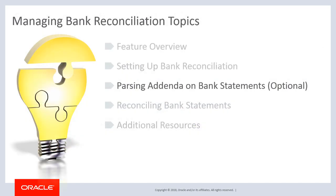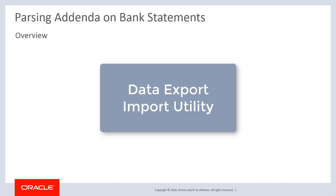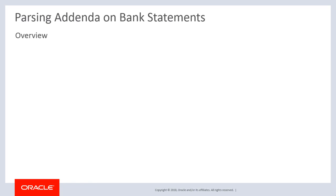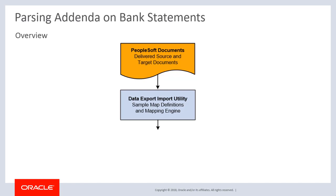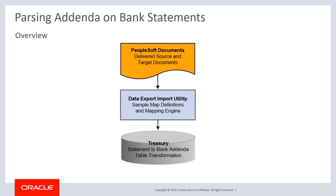The Data Export Import Utility is used to extract information from addenda on a bank statement by breaking down unstructured addenda information into its component parts and storing it in a structured format. This information can then be used to help find matches between bank transactions and system transactions using addenda information. The Import Utility uses PeopleSoft delivered source and target documents for parsing addenda and allows users to configure transformations through an online mapping component. Please note, parsing addenda is optional and users should be familiar with PeopleSoft document technology and Data Export Import Utility map definitions before parsing bank statement addenda.